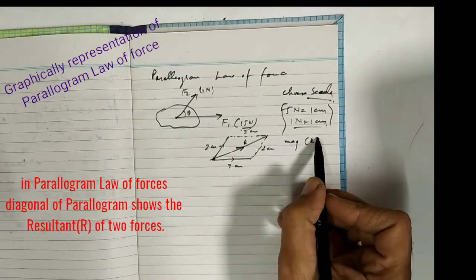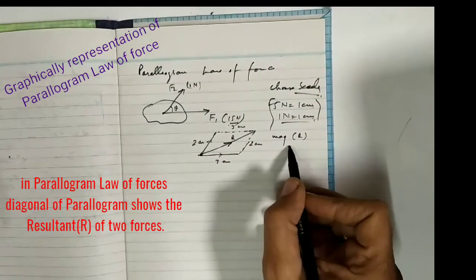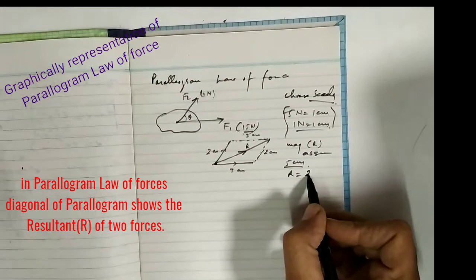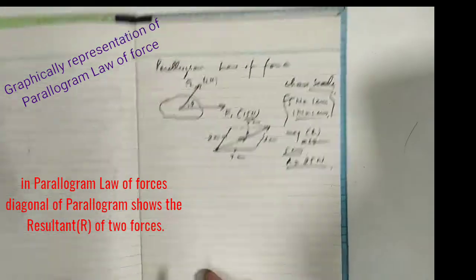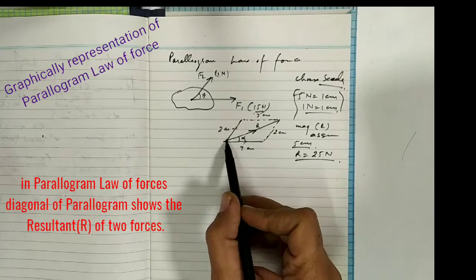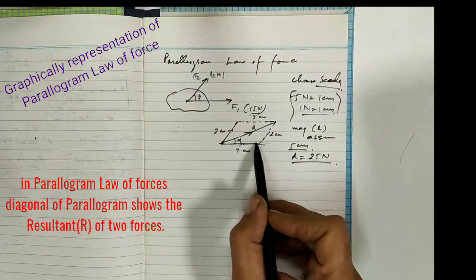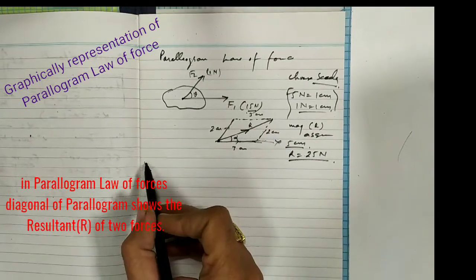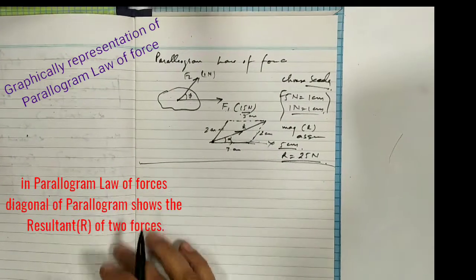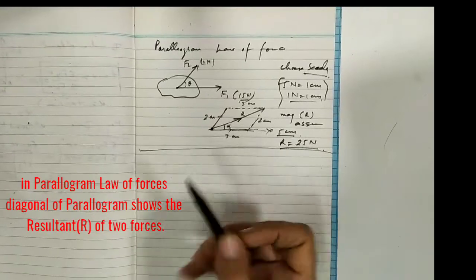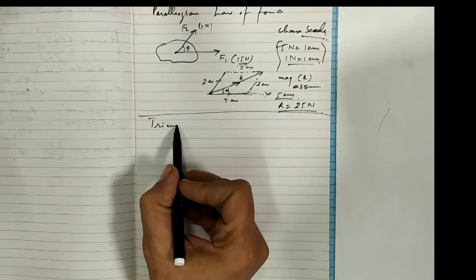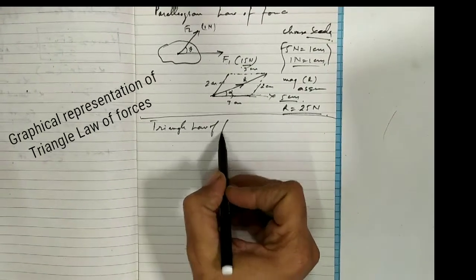The magnitude of the resultant R is found by measuring the diagonal. For example, if R measures 5 centimeters, that means the resultant is 25 newton on our scale. The direction of the resultant is found by measuring the angle alpha from the horizontal axis. This completes the graphical method for the parallelogram law. The analytical method will be provided in notes.